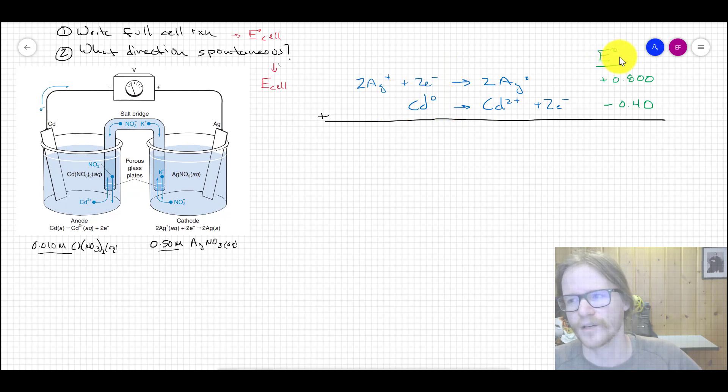I have our standard reduction potentials which come from a table. The cadmium one is my minus 0.40 that comes straight from the table as a reduction, but we have it written as an oxidation, so what I need to do is either subtract that or multiply by minus one as I flip it around and then add down. Either way that'll give us the two silver pluses plus the cadmium zero makes cadmium two plus plus the two silver zero, and that gives us this E°cell at positive 1.2 volts.